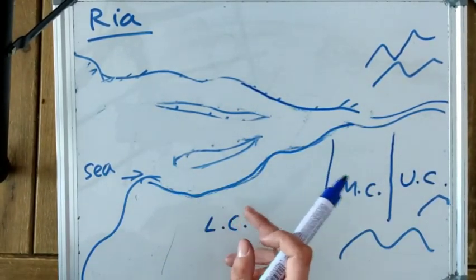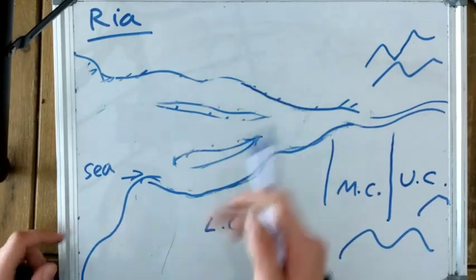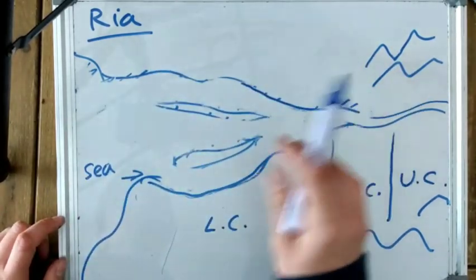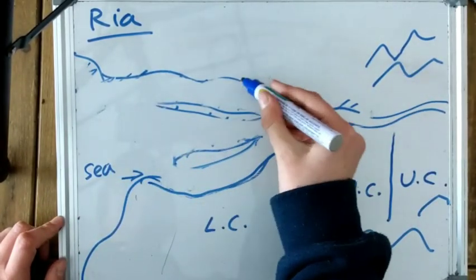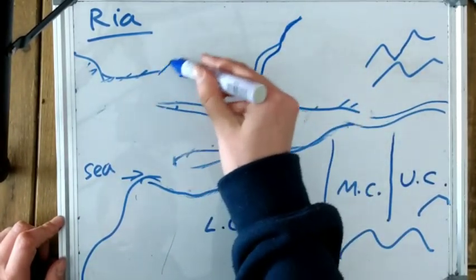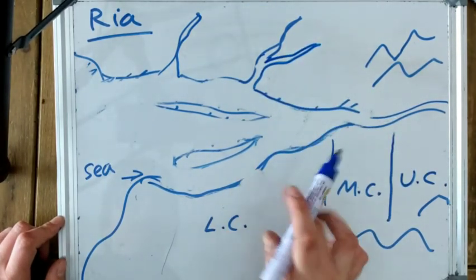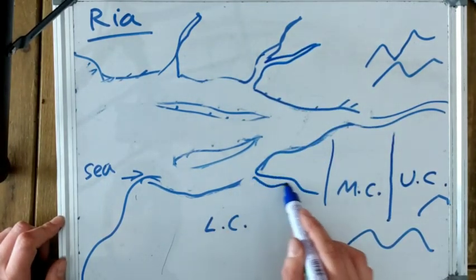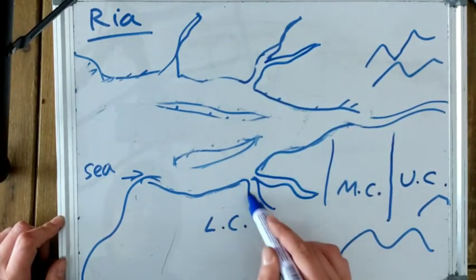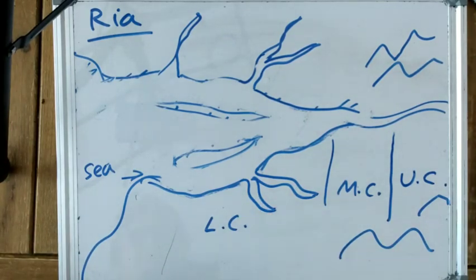There were tributaries there as well. These tributaries also get flooded if they're in the lower course. So there you have your ria.